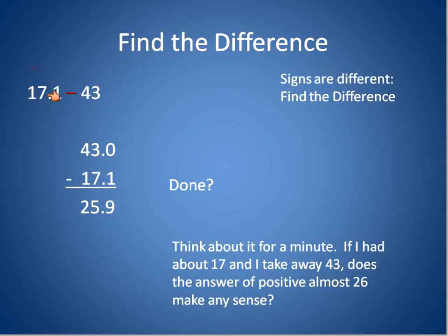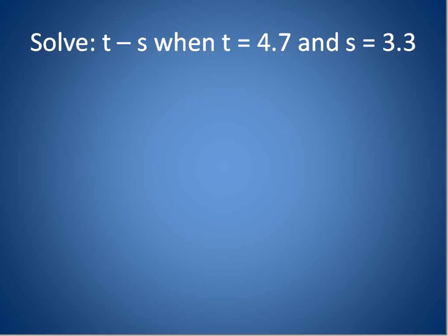Think about it for a minute. If I had 17, about 17, and I take away 43, am I going to have 25, almost 26? Again, think of it in terms of money. If I had 17 dollars and I lost 43 dollars, would that mean I have 25 left? I have more than what I started with? That doesn't make any sense, right? When you're subtracting a larger number, the final answer takes the sign of the larger number. So, the final result is negative. We actually have negative 25.9, almost negative 26.